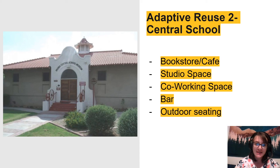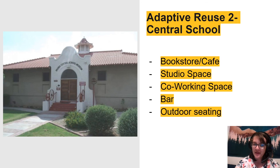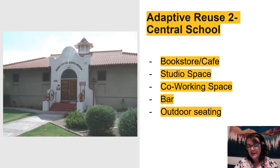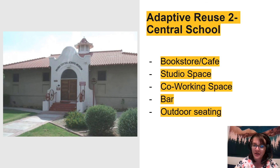The Central School is made up of four buildings in Old Town Peoria. The first is the largest and was the main schoolhouse, which we recommend be transitioned into a bookstore and cafe on one side, and in the other half be a studio space for local artists to work. The other three outbuildings should be converted into co-working space and a bar, and there should be plenty of outdoor seating for everyone to enjoy and congregate on the lawn around the school.